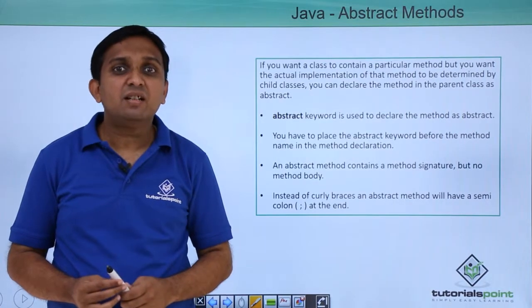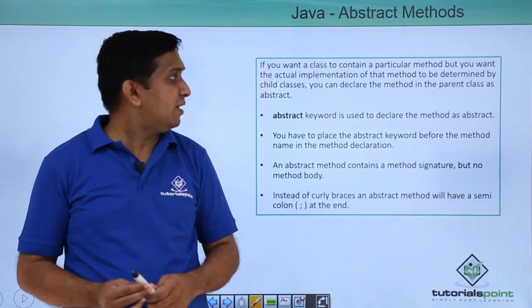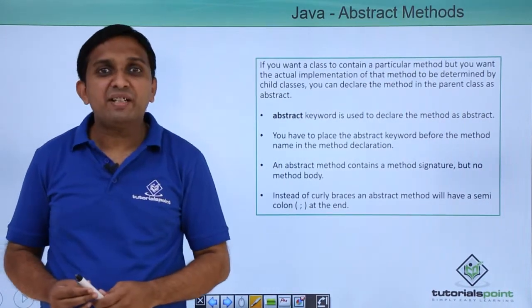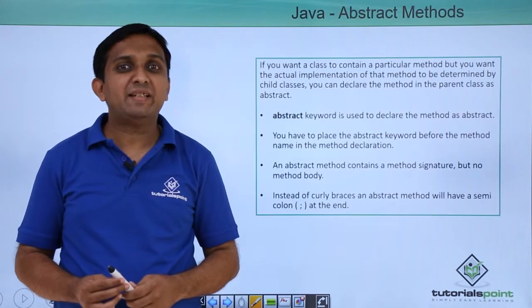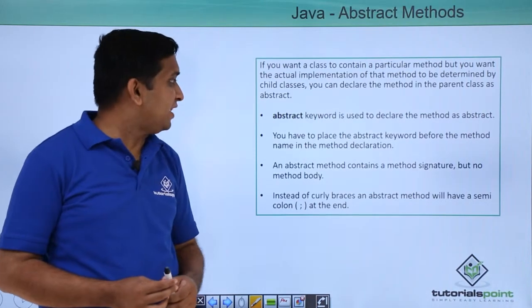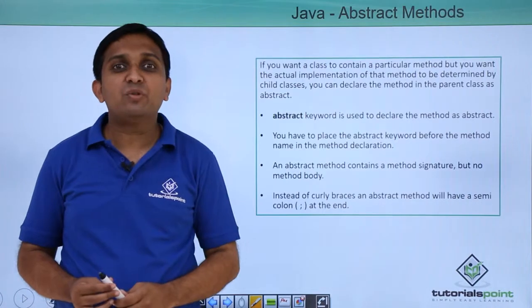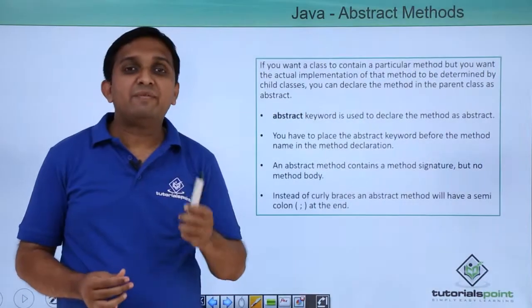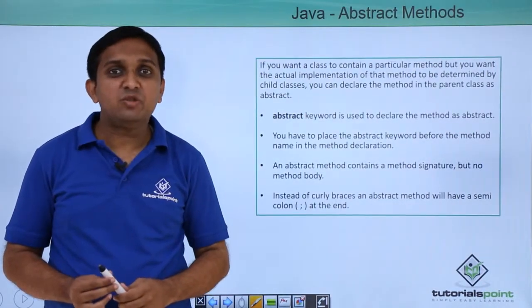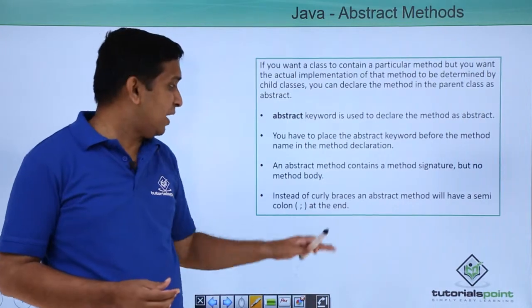So how to declare a method as an abstract method? We need to make use of the abstract keyword to declare a method as abstract. The abstract keyword is written before the method declaration. An abstract method contains only a declaration, there is no body. So at the end, we have to write a semicolon.